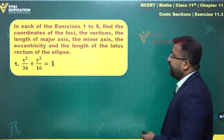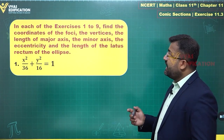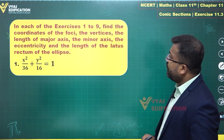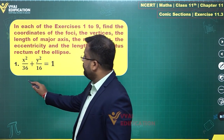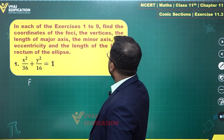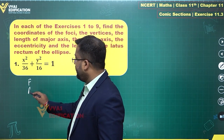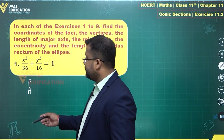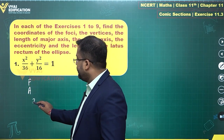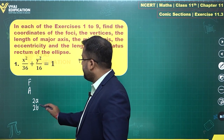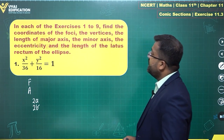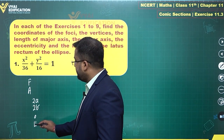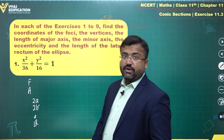Let's begin with the first question. The question says: in each of the exercises 1 to 9, find the coordinates of the foci, vertices, the length of major axis and minor axis — 2a and 2b — eccentricity, and the length of latus rectum. All of these things are required.